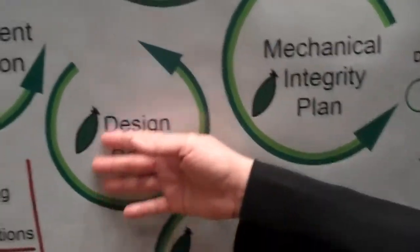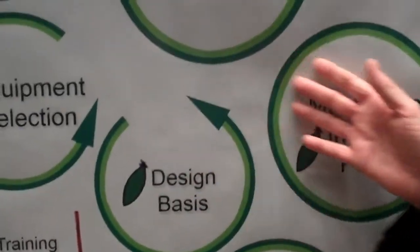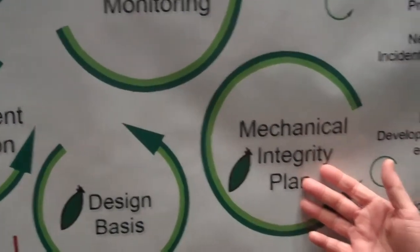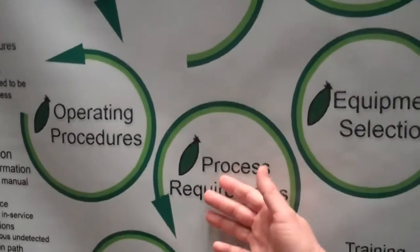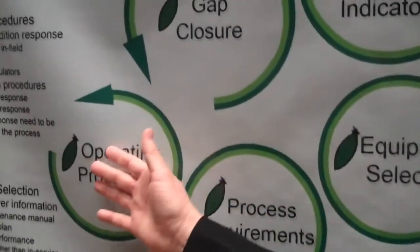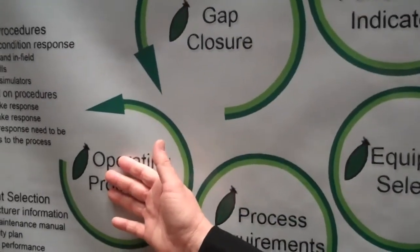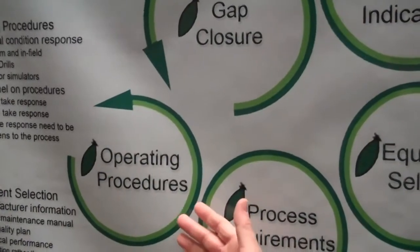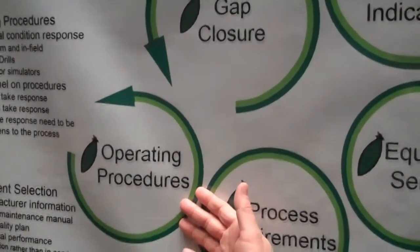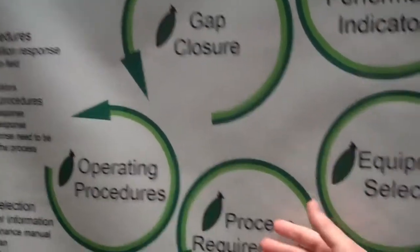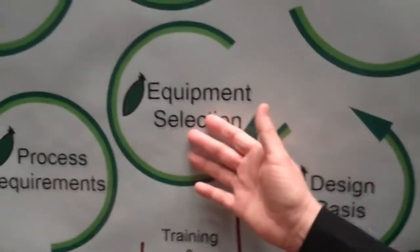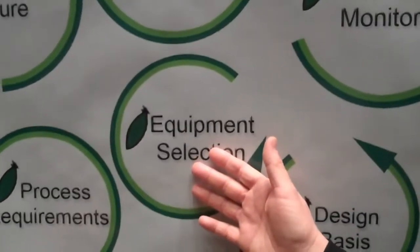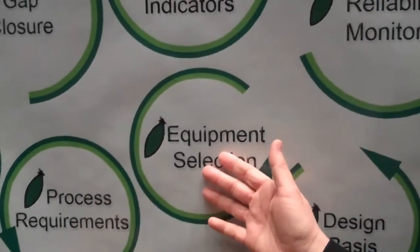From the performance verification to design basis, we develop our mechanical integrity plan on what's necessary to maintain the equipment. The hazard analysis that led to the process requirements yields operating procedures on how we cover safe automation and safe operation of the process. The process requirements in the design basis lead us into selecting equipment that we install and maintain according to the mechanical integrity program.